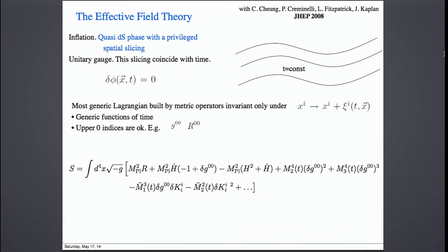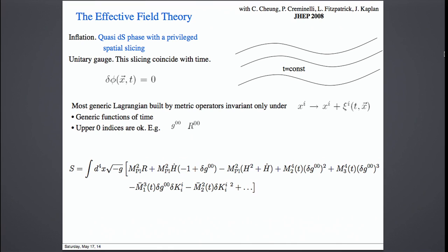During the de Sitter phase, there is a privileged time slicing where this physical clock — whatever it is, it could be a scalar field or some strongly coupled sector — can be taken to be uniform by a gauge transformation. Once we are in this gauge, we follow the rules of effective field theory and write down the most general Lagrangian compatible with the symmetries of the problem. The symmetries are time-dependent spatial diffeomorphisms. We can change coordinates on every spatial slice. The only fields at our disposal are the geometric fluctuations, but we can write terms that are not full spacetime diff-invariant, but only invariant under this subgroup.